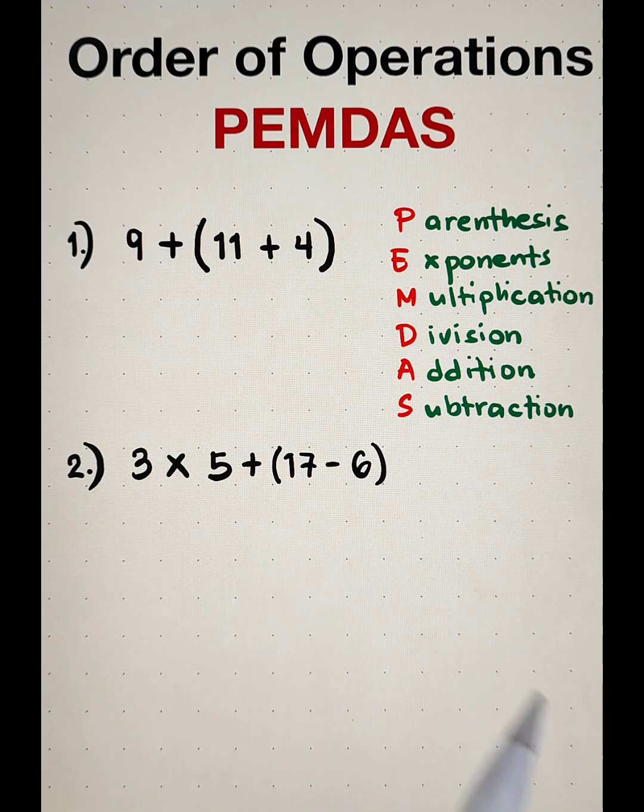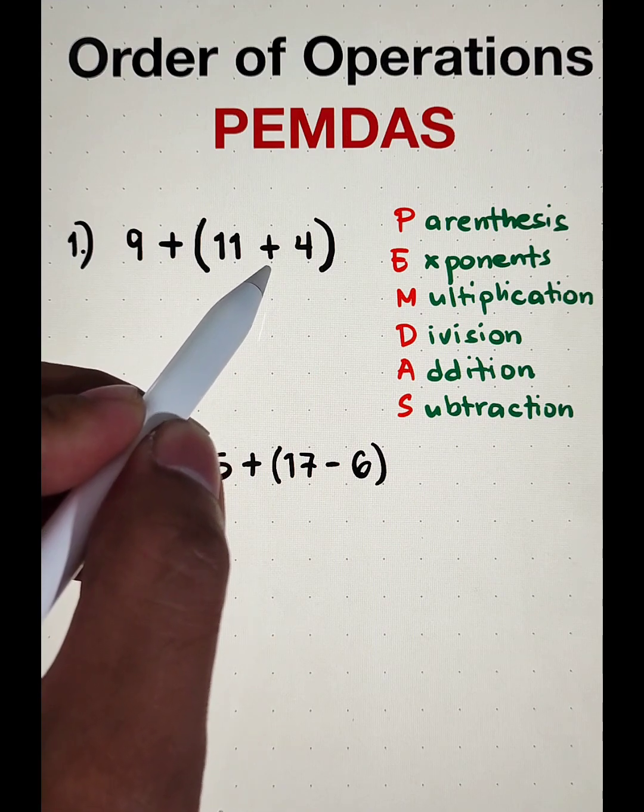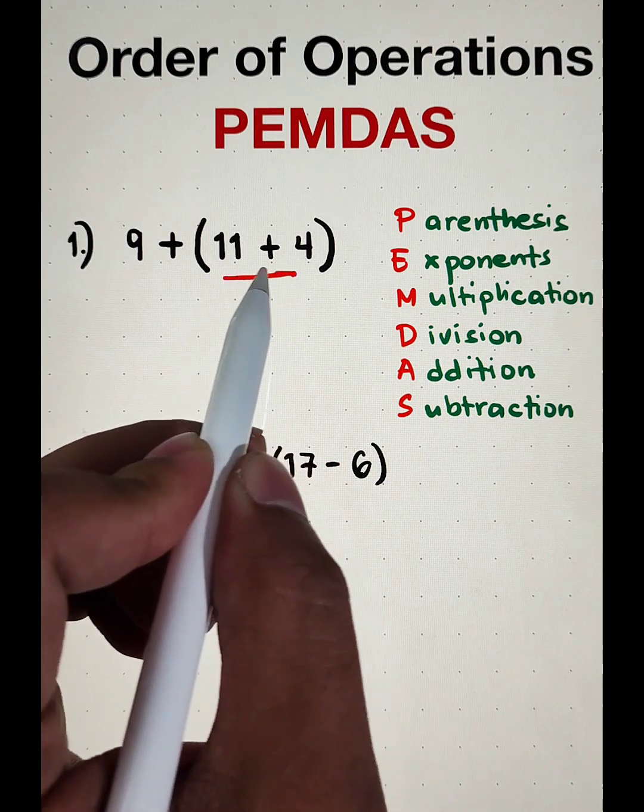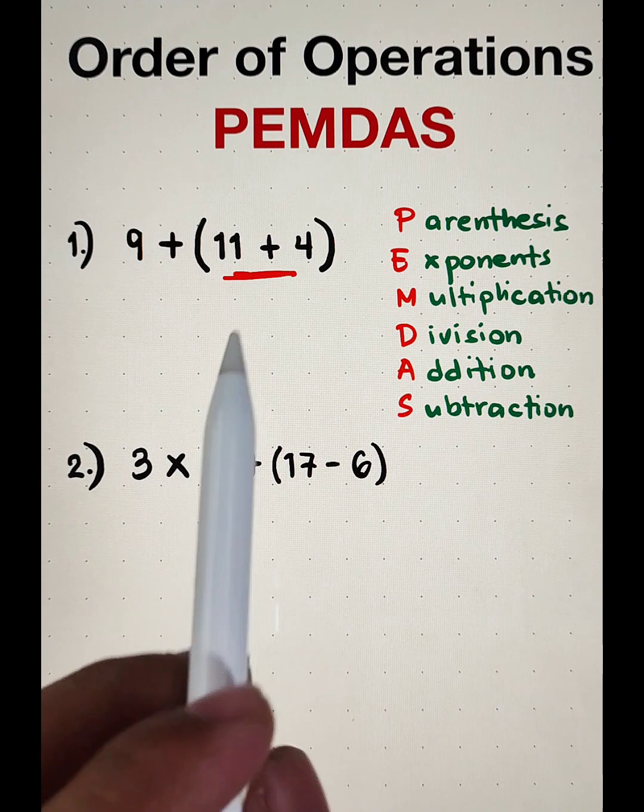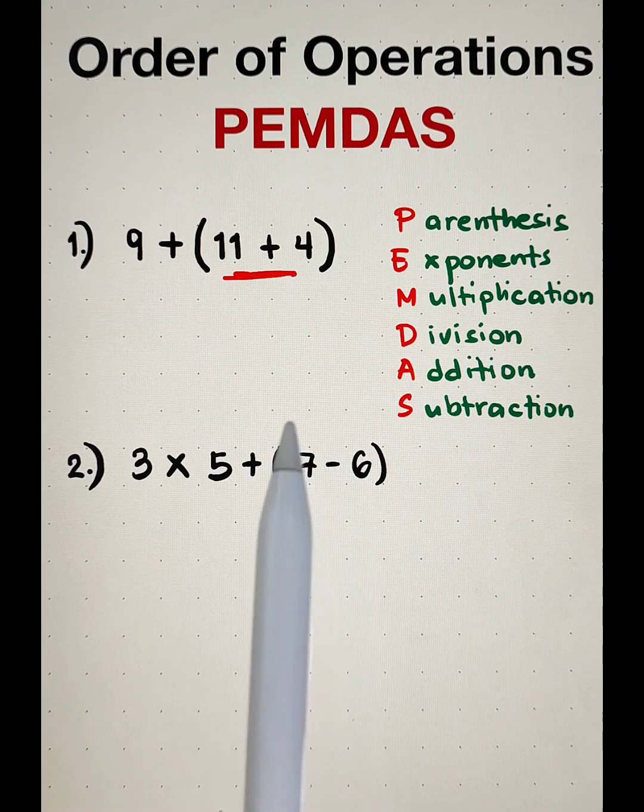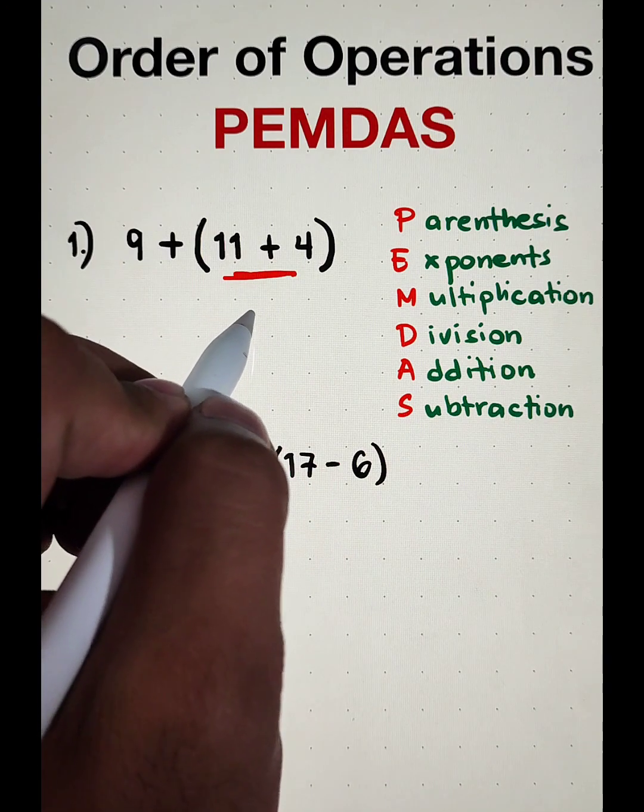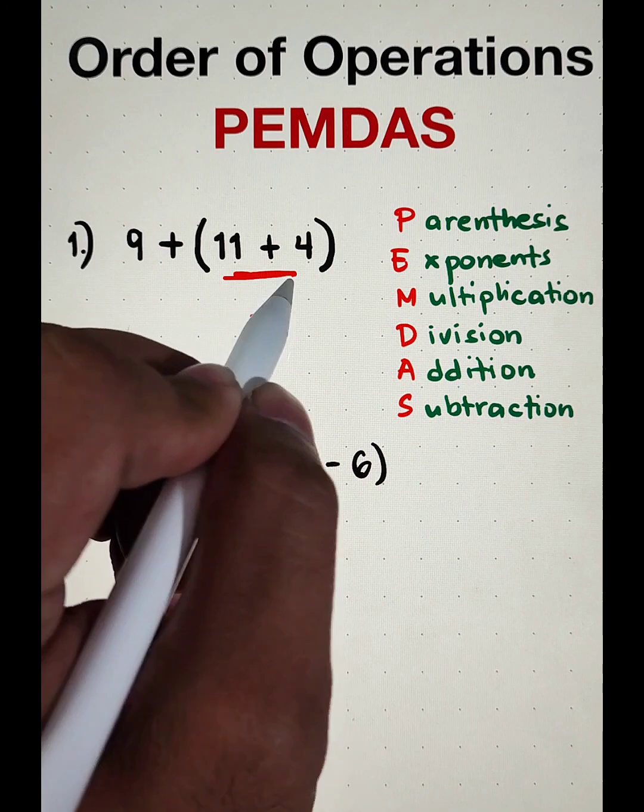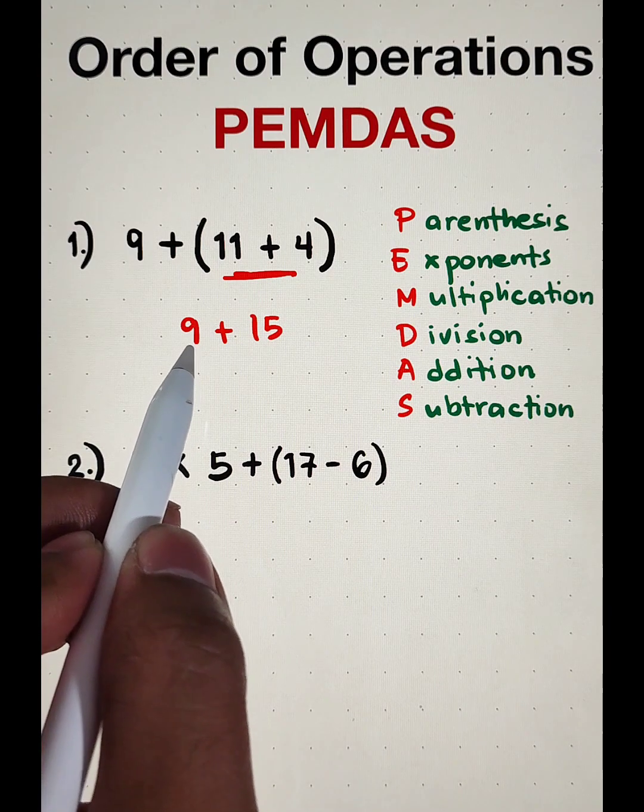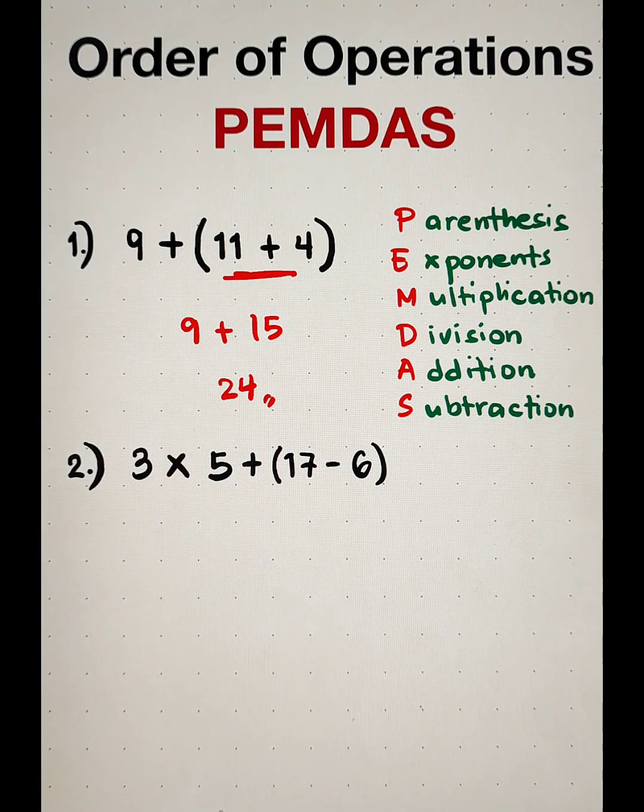So, without further ado, let's do this topic. What we have here, number 1, is 9 plus the quantity of 11 plus 4. And what we need to do here, guys, is to simplify first the expression inside the parentheses. Remember, when you are doing order of operations, the first thing you need to do is to accomplish the parentheses. So, what we have here is 11 plus 4, and that is equal to 15. So, as you can see, we're done with the parentheses, and let's copy 9 plus 15. Simplifying these numbers, 9 plus 15, this will give us the answer of 24 as our final answer.